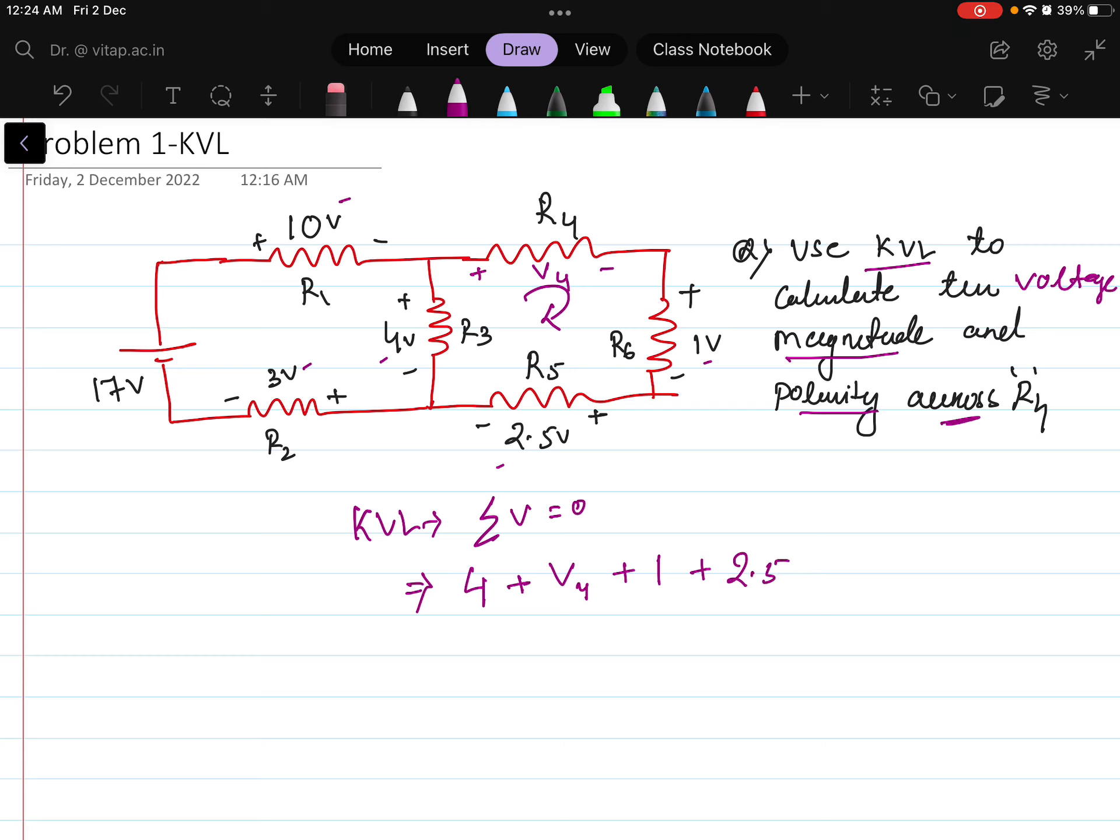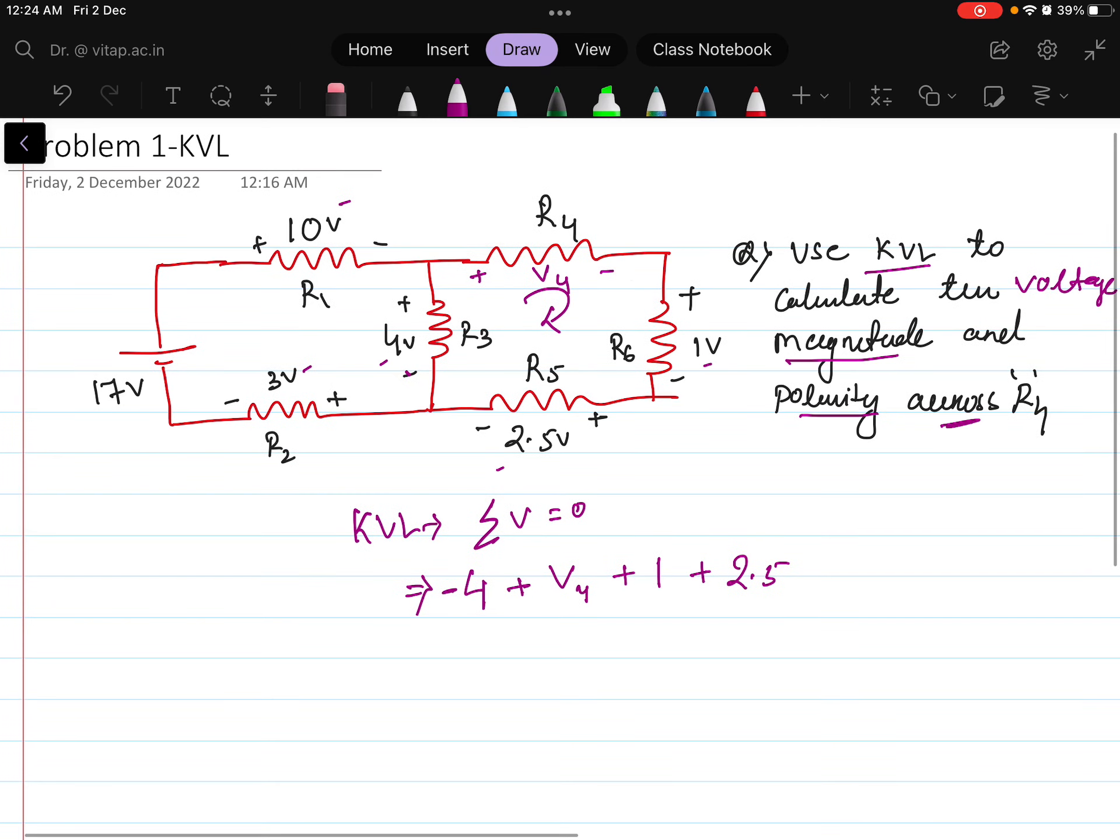You can write here 2.5 and then here the voltage will be minus 2 plus. This will be minus here. Minus 2 plus this is minus, that equals to 0. That implies what is the value of Vx? The value of Vx will be - if you calculate here it will be 3.5 and the value is 0.5.